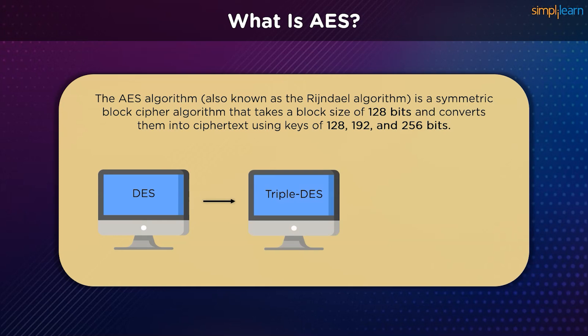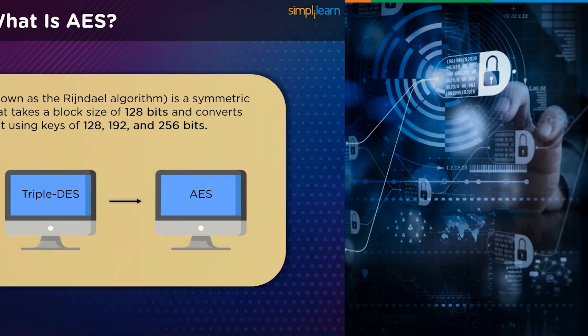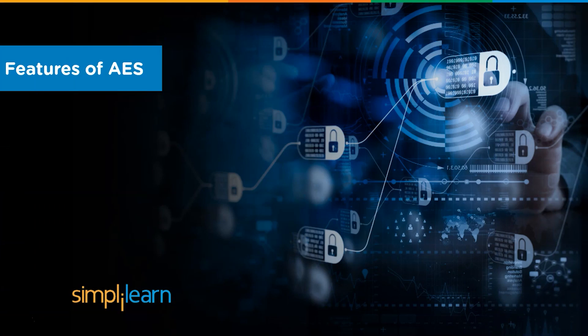Strong cases were presented by the MARS, RC6, Serpent, and Twofish algorithms, but it was the Rijndael encryption algorithm, also known as AES, which was eventually chosen as the standard symmetric key encryption algorithm. Its selection was formalized with the release of Federal Information Processing Standards Publication 197 in November 2001, and it was approved by the US Secretary of Commerce.